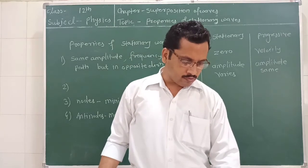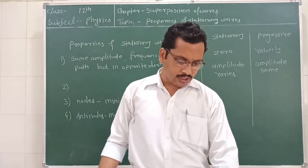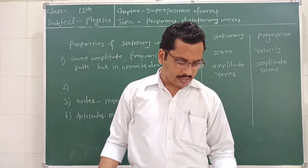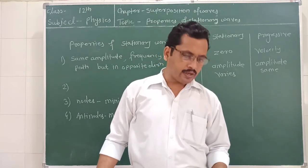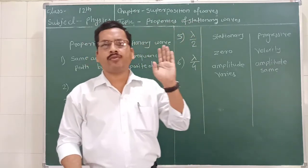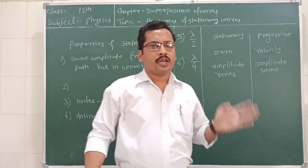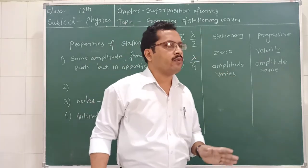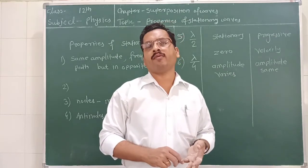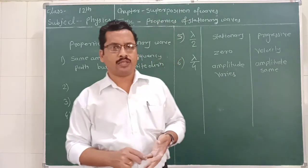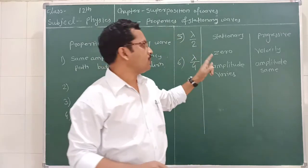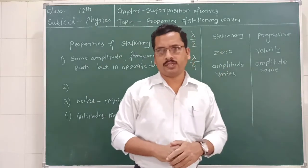The third point: in a stationary wave, all the particles cross their mean position simultaneously. But in a progressive wave, that does not happen. In a stationary wave, all the particles vibrate above their mean position simultaneously, but in the case of a progressive wave, all the particles do not vibrate above their mean position at the same time.